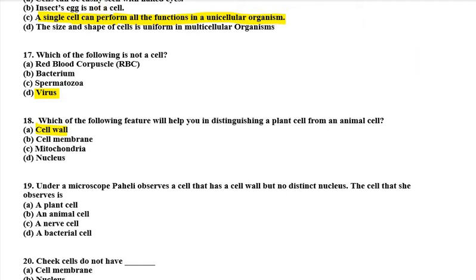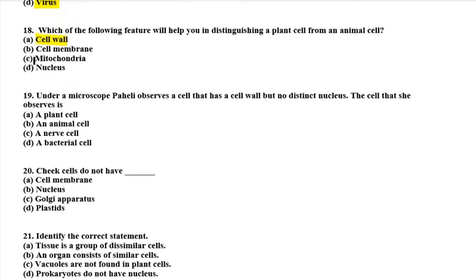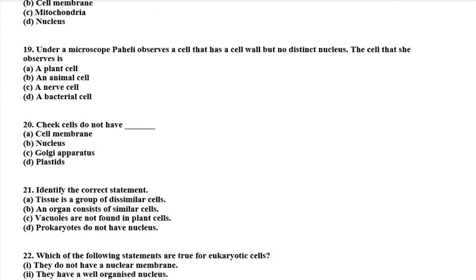Nineteenth question: under a microscope, Paheli observes a cell that has a cell wall but no distinct nucleus. The options are plant cell, animal cell, nerve cell, or bacterial cell. The right answer is bacterial cell, because a bacterial cell's nucleus is not well-organized — it does not have a membrane-bound nucleus.